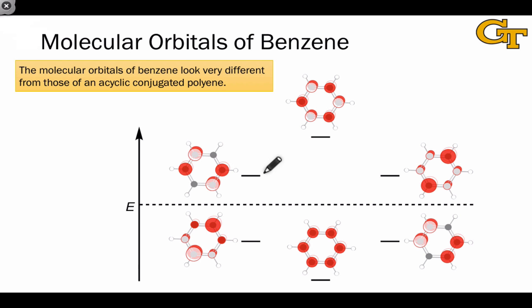An examination of the molecular orbitals of benzene shows us that they look very different from the molecular orbitals of even an acyclic conjugated polyene like hexatriene. The benzene molecule has six pi electrons, two for each of its pi bonds.